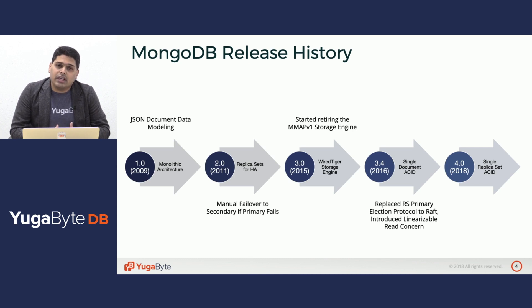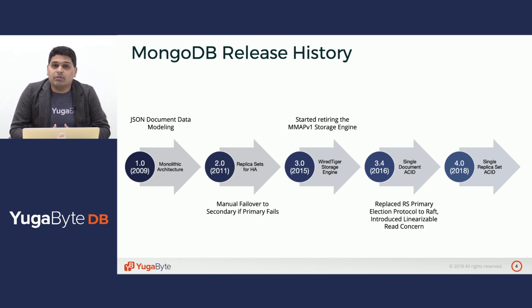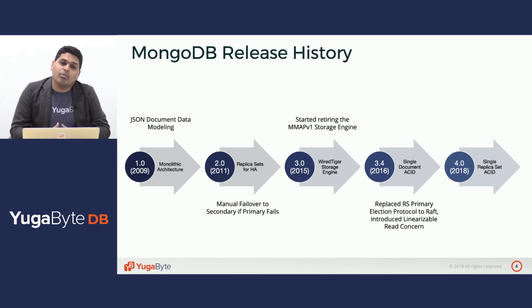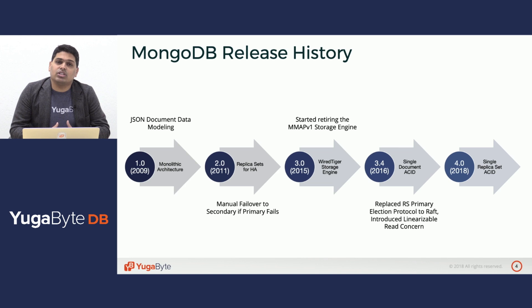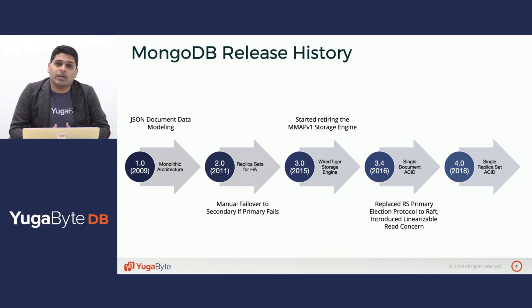In 2011, as the 2.0 release came by, people had started using MongoDB for important applications. And as a result, high availability became important, hence the addition of replica sets, which are essentially a combination of one primary and multiple secondaries so that an operations engineer can manually fail over to the secondary if a primary node dies.